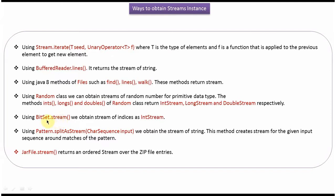The stream() method of the BitSet class returns a stream of indices as an IntStream. The splitAsStream() method of the Pattern class returns a stream of strings. The stream() method of JarFile returns an ordered stream over the ZIP file entries.